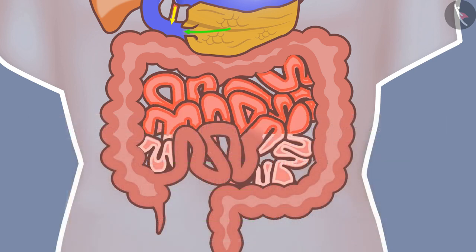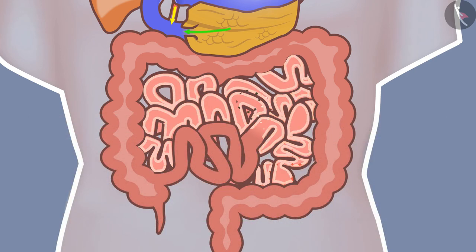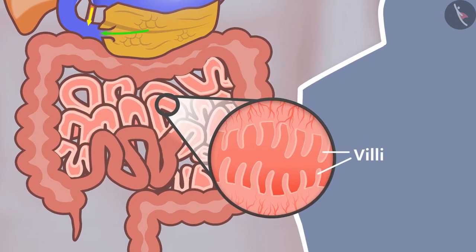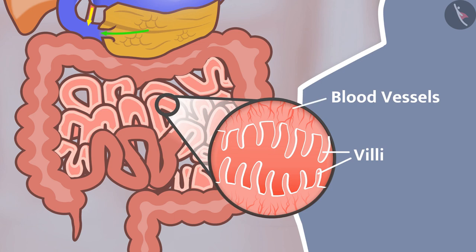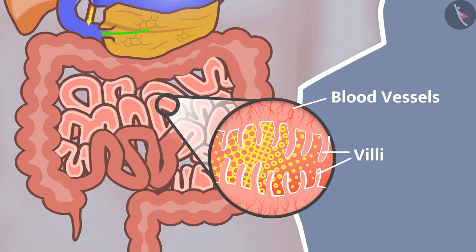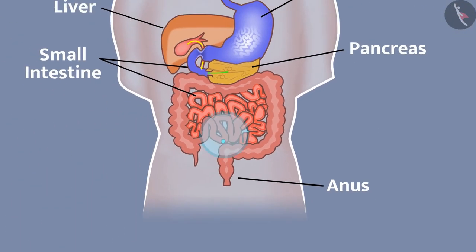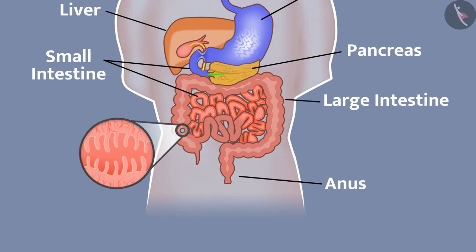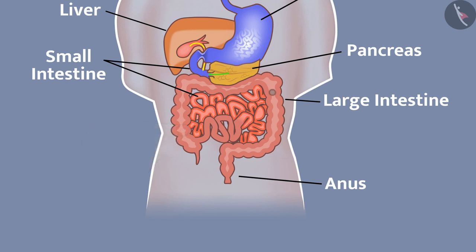The wall of the intestine absorbs the digested food. The inner lining of the small intestine has numerous finger-like projections called villi, which increase the surface area of absorption. Villi have abundant blood vessels that absorb food and carry it to each cell of the body. After this, the undigested food enters the large intestine, where villi absorb water from the undigested material. Waste material is then removed from the body by the anus.